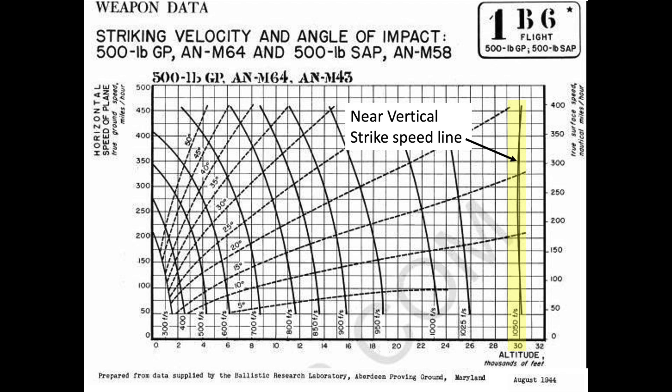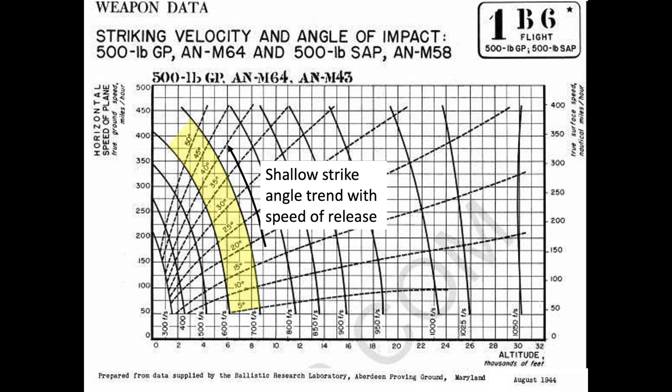In other words, it doesn't matter if the plane is releasing the bomb from 50 miles an hour or 450 miles an hour, the strike speed of the bomb is still 1,050 feet per second. The faster the bomber's release speed, the shallower the bomb's strike angle.